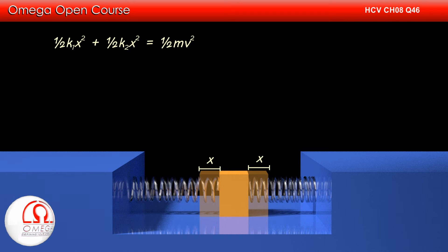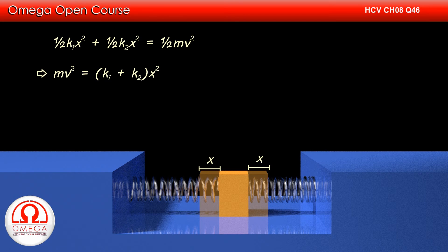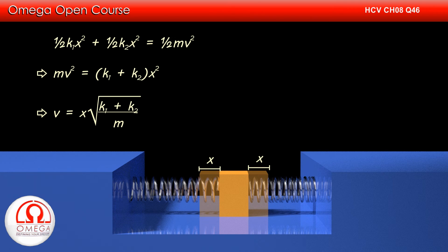Therefore, ½K1x² + ½K2x² must be equal to ½Mv². Dividing both sides by half and simplifying, we get Mv² equals (K1 + K2)x². Which implies V equals x times the square root of (K1 + K2) divided by M. This is our answer.